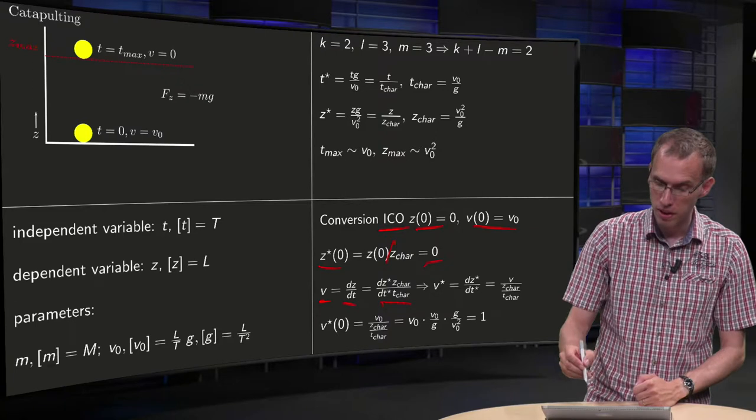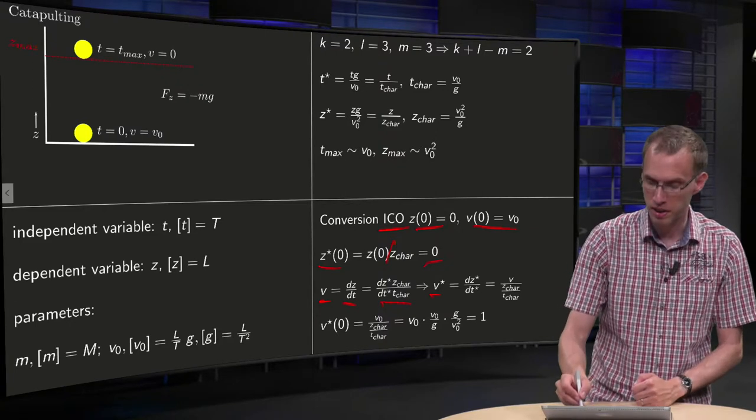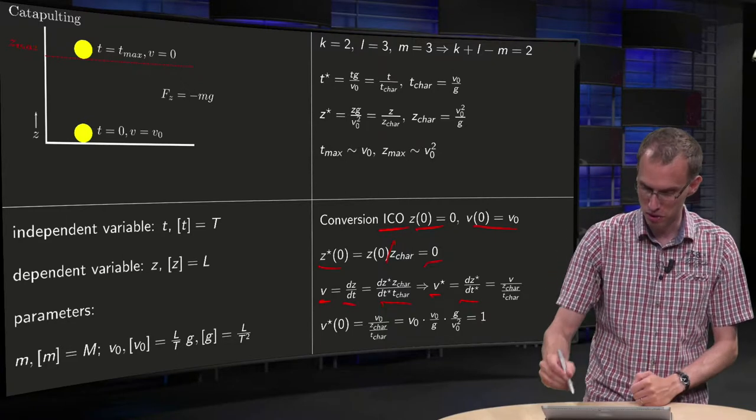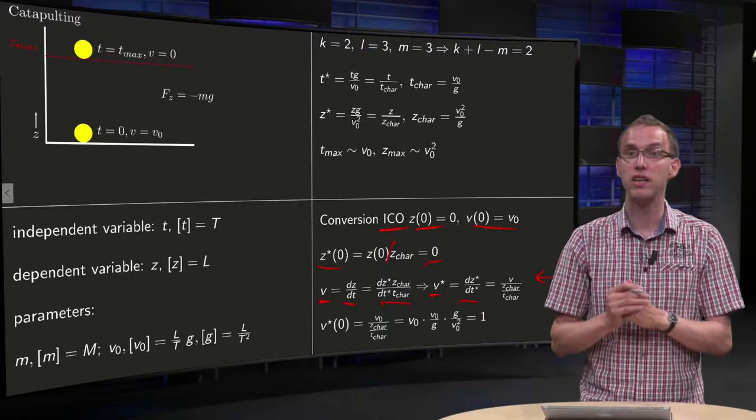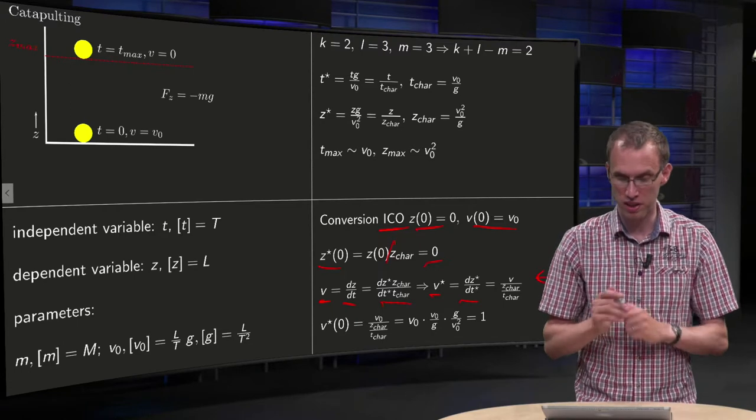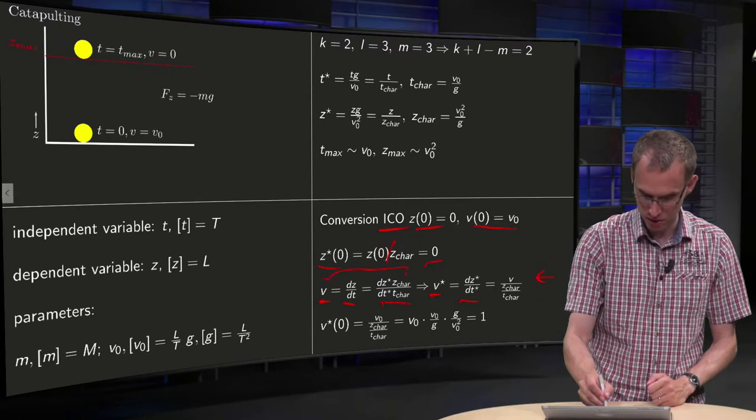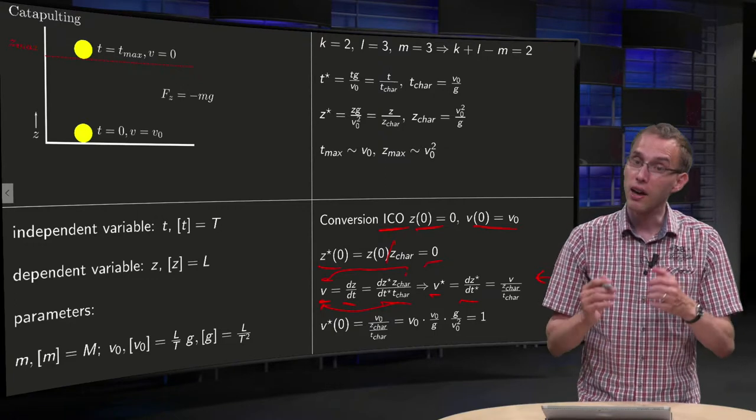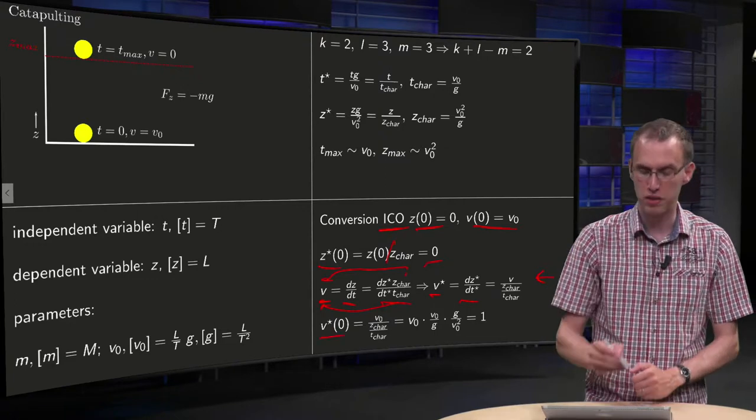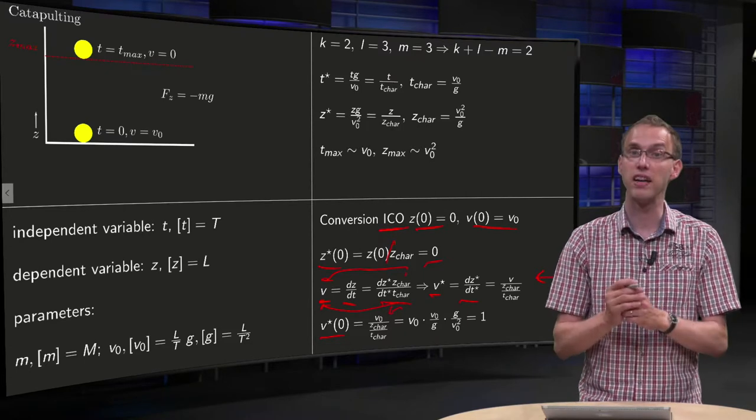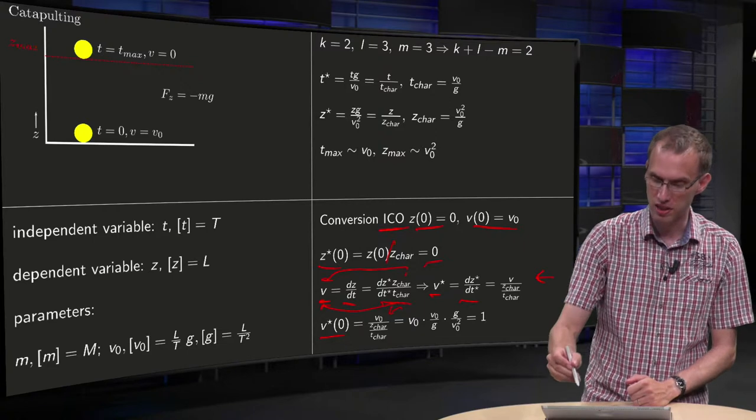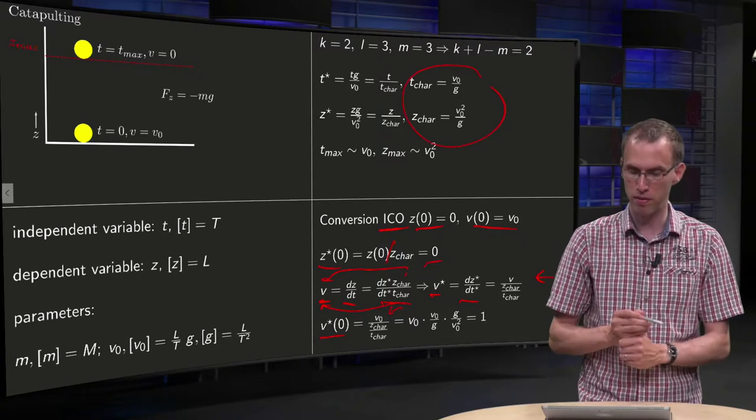So if you define v* to be dz*/dt*, we find that this is equal to v divided by z_char over t_char by putting those terms to the other side. And you can also find v* of 0, that equals v0 divided by z_char over t_char.